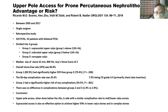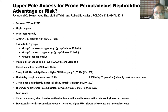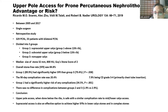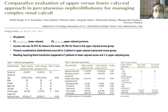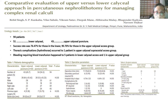In Group 1 there was a significantly higher stone-free rate compared to Group 3. The 90-day complication rate was 20.4%, primarily chest tube insertion in Group 1. There was no significant difference in complication rates between Groups 2 and 3. The conclusion was that upper pole access done below the rib is safe with similar complication rates to mid or lower pole calyx. A 2015 article similarly reported higher stone-free rates with upper pole puncture but more thoracic complications such as hydrothorax.